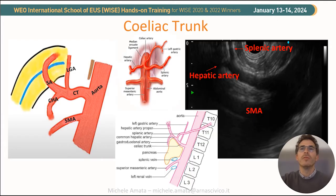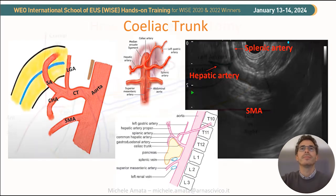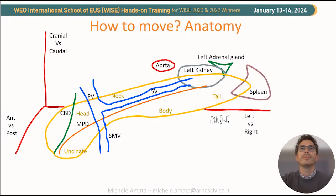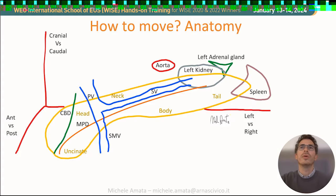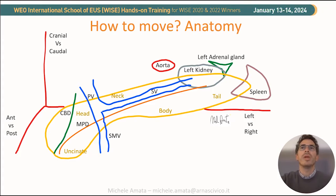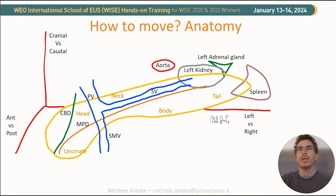From this position, by pushing the scope slightly and moving down the big wheel, we will reach the pancreas. It is important to know that the pancreas is in an oblique position, with the body and tail in a more cranial location compared to the head. The body and tail are on the left side of the body, near the left kidney and the spleen. It lies behind the stomach in a retroperitoneal position.